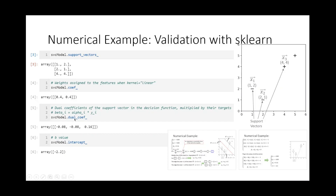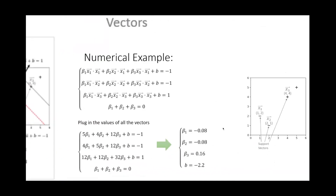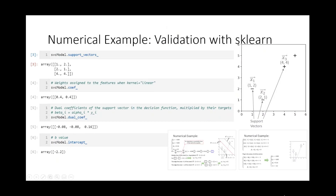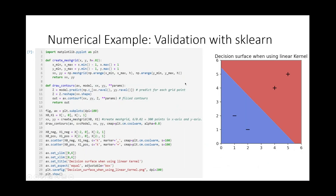The scikit-learn library also provides the dual_coef_ attribute, representing the alpha_i times yi values — our beta_i values — which outputs minus 0.08, minus 0.08, and 0.16, the same as our manual calculation. The intercept, the b value, is minus 2.2 — also matching. Finally, I plot the decision surface using the linear kernel, and you can see the hyperplane is the same as what we obtained by manual calculation.